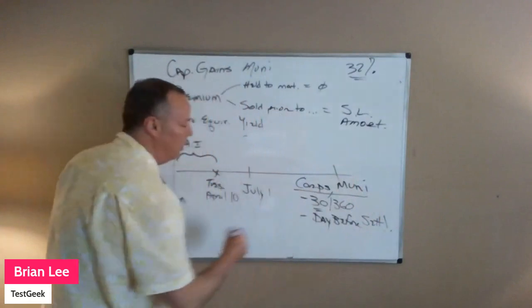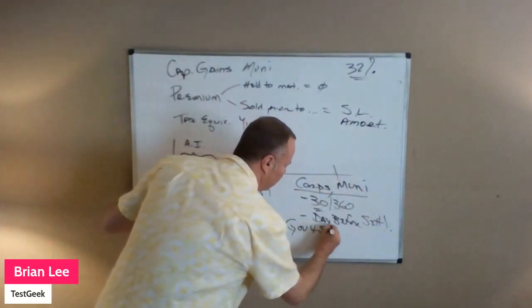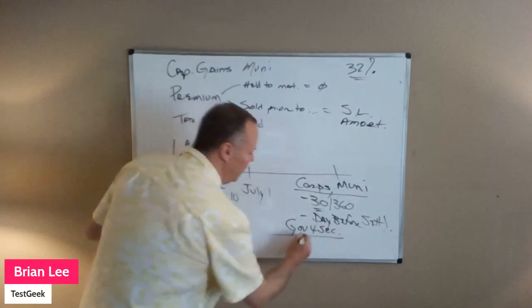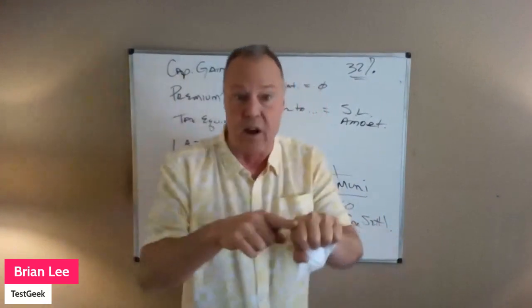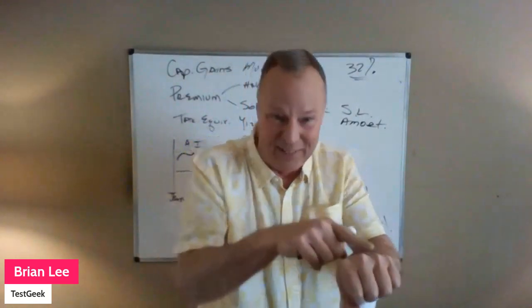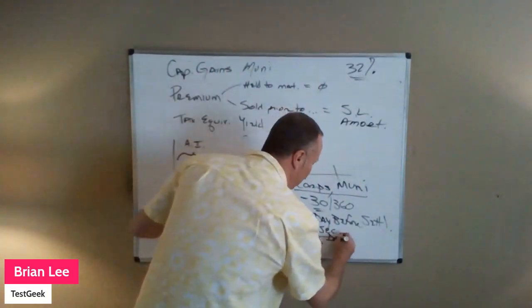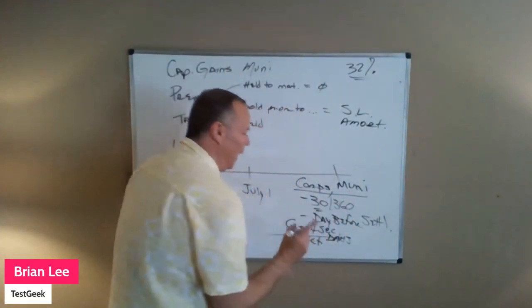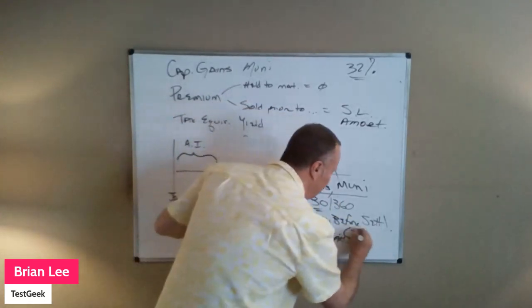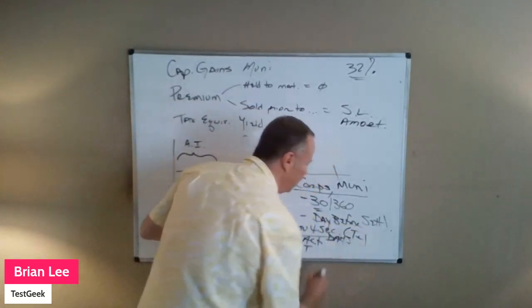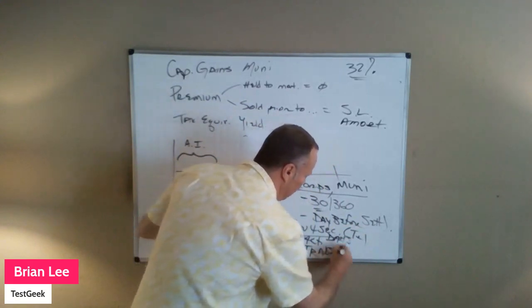The other convention Dean mentioned: government securities — the 'govies' — use actual days. Someone in the government actually learned the real calendar method. They use actual days, and interest accrues up to the day before settlement. But since govies are T plus one, the day before settlement is the trade date itself.